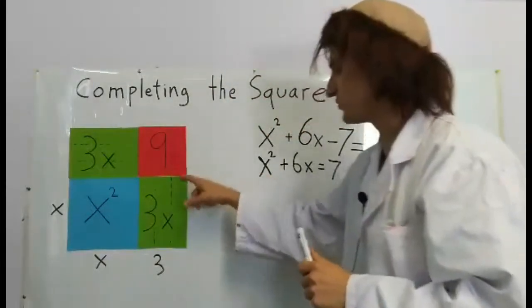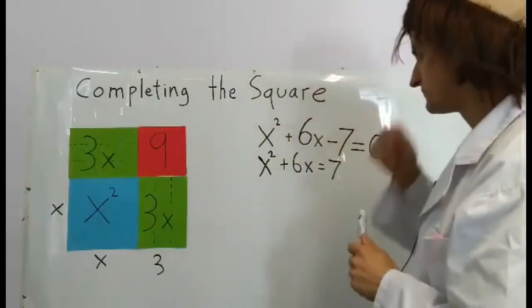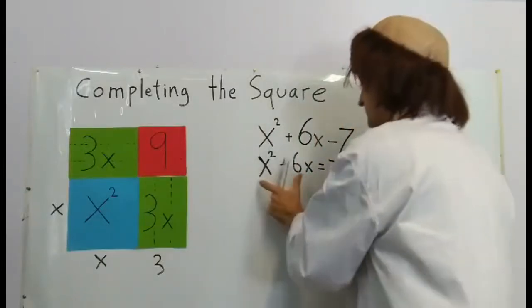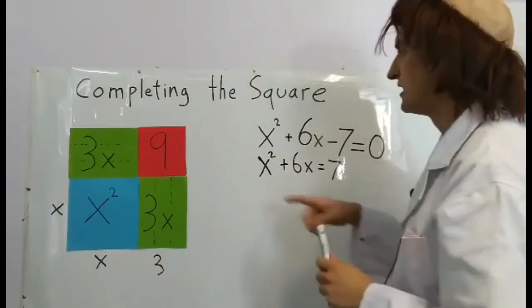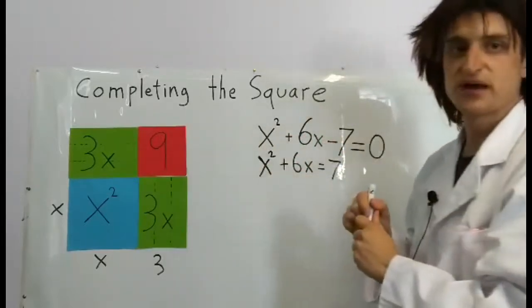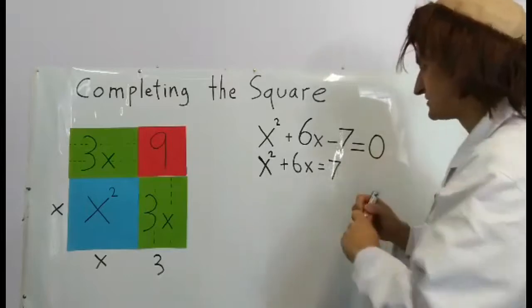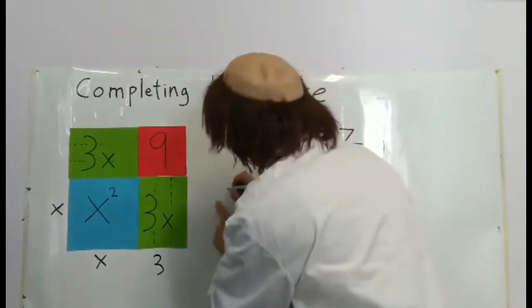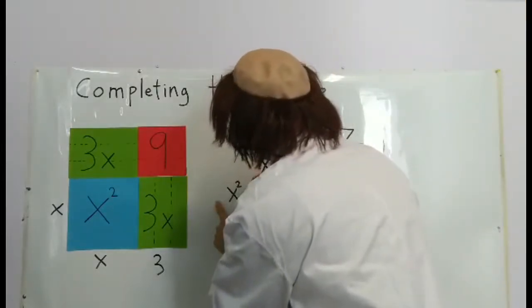Let's go back to this equation from earlier. We can write it as a square. Since we added 9 to this side, we also have to add 9 to the other side. We can rewrite this as x² + 6x + 9 = 7 + 9.